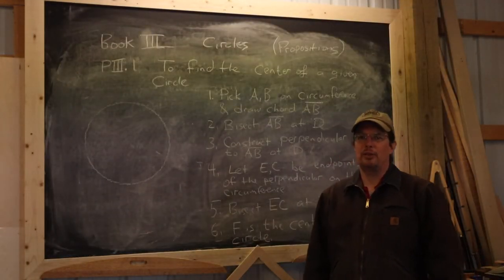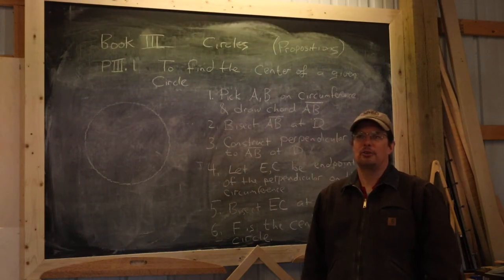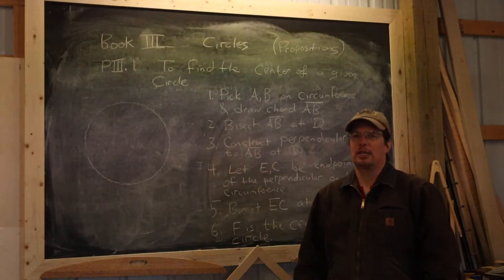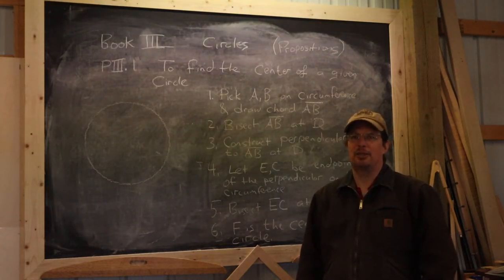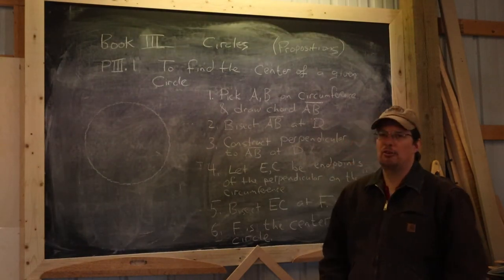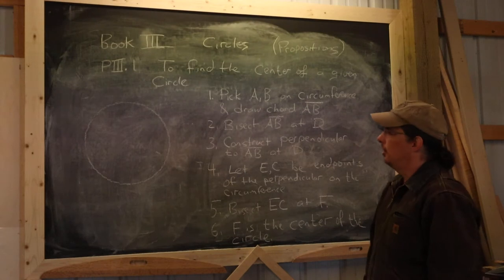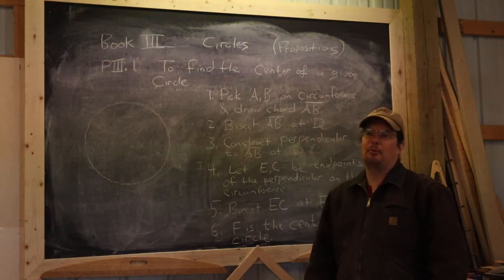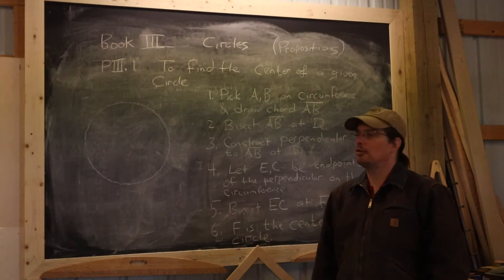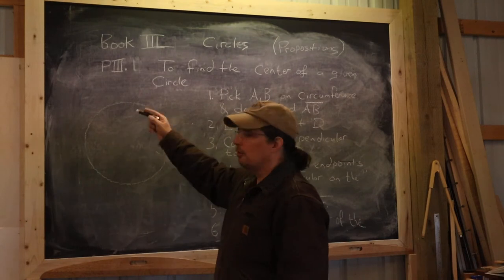Welcome back. With our definitions from Book 3 in place, we also need to establish some of Euclid's propositions related to circles — in particular, how we construct circles given various kinds of input information. The very first proposition in Book 3 allows you to find the center of a given circle, so that perhaps we could copy that circle to other locations.